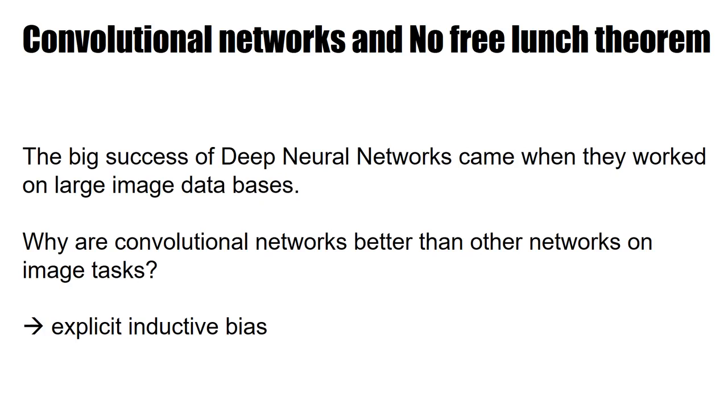So the question then is why are convolutional networks so much better than other deep networks on image tasks? And the reason is some rather explicit inductive bias. And to explain this, let me make a little bit of detour and talk about inductive biases.